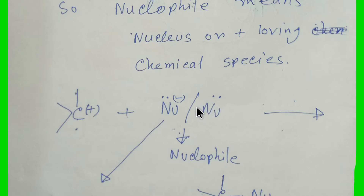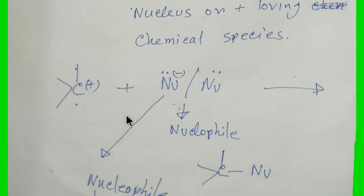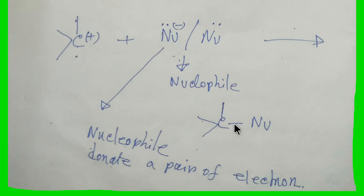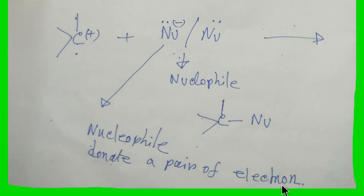This nucleophile will like the positive center, right? Nucleophile means nucleus-loving, nucleus means positive — so the nucleophile loves the positive center and thus it will make a new covalent bond. So the nucleophile is giving a pair of electrons and making a covalent bond. We can say that a nucleophile donates a pair of electrons.